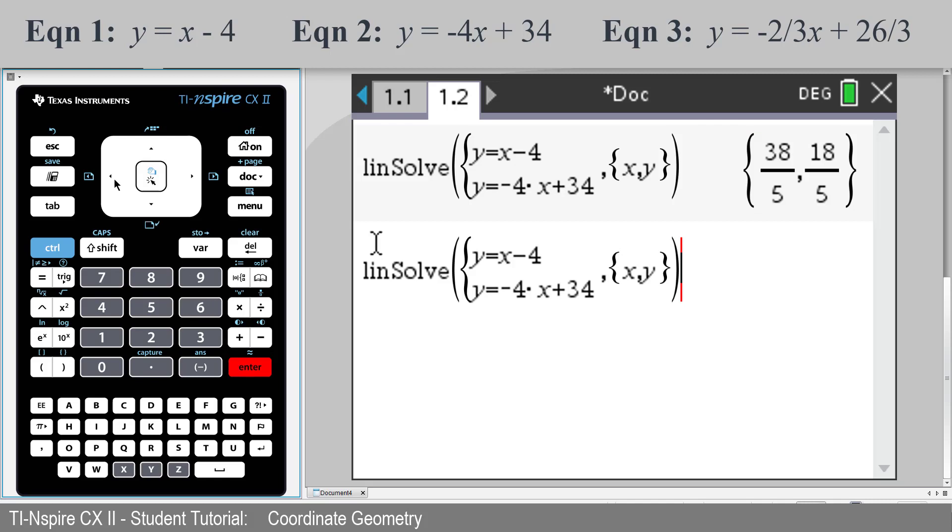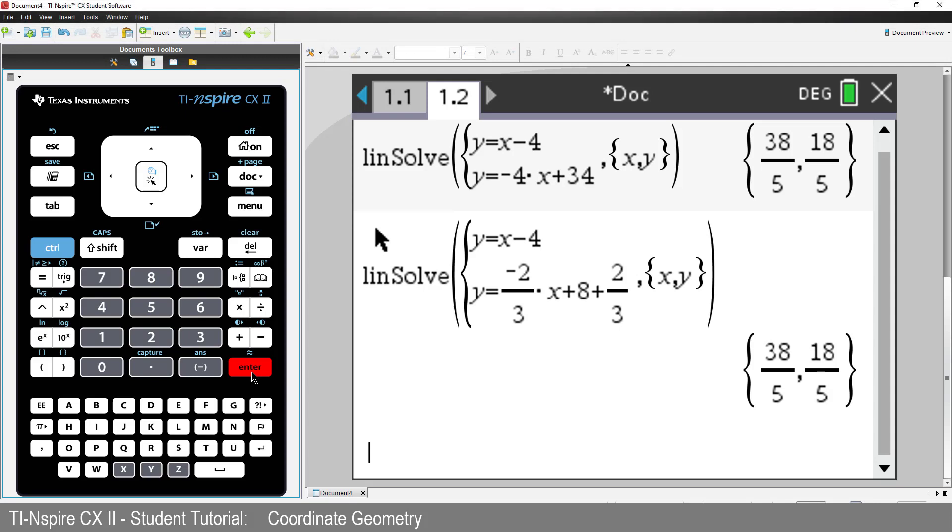Let's check another pair of equations. We get the same point of intersection, which means points D and E are actually the same.